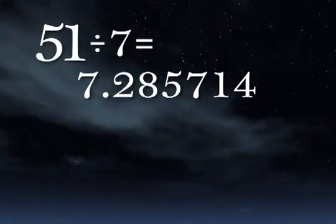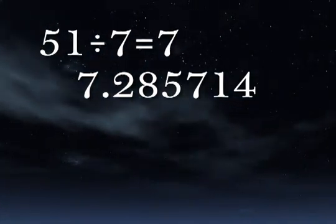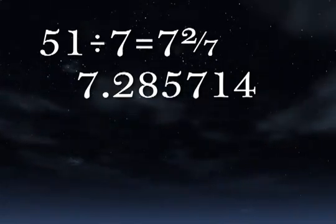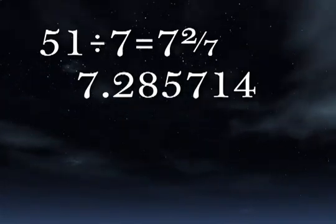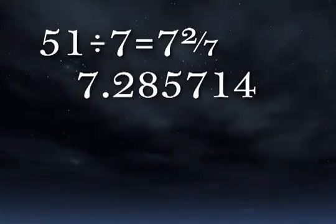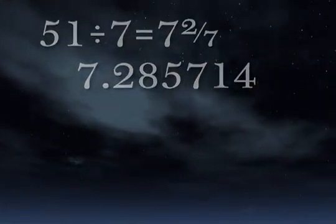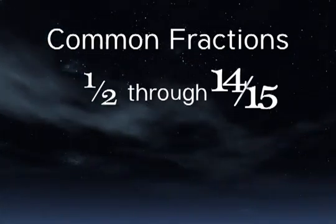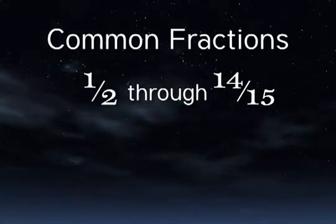7 goes into 51 seven times with the remainder of 2. So the answer as a mixed number is 7 and 2 sevenths. 2 sevenths is a common fraction. We're going to learn the decimal equivalence of all fractions ranging from 1 half to 14 fifteenths. And there's really not much to it.